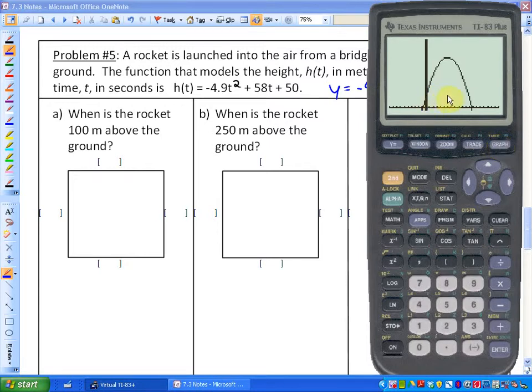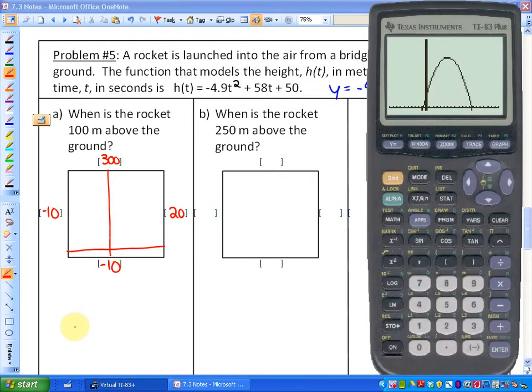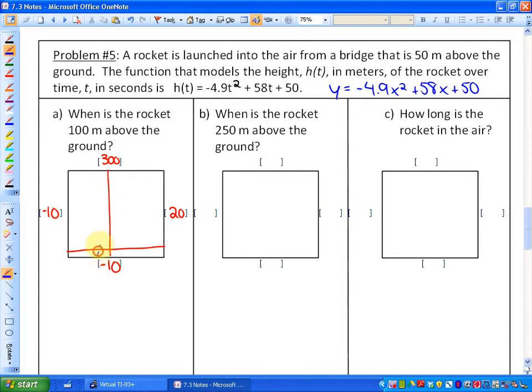Alright? So what we are going to do... Well, that's the graph. Maybe I'll just draw it. So our window, in this case, is from negative 10 to positive 300 on your y axis. And from negative 10 to positive 20 on your x axis. So that is what the graph that we're looking at looks like. And it looks something like that. Okay?